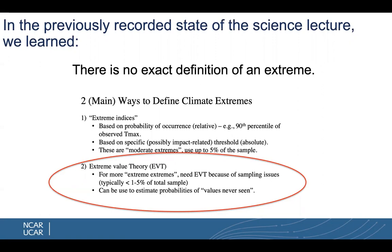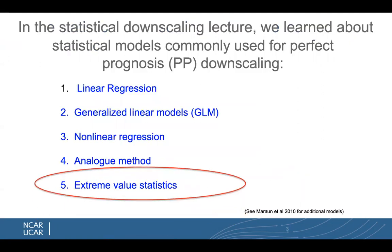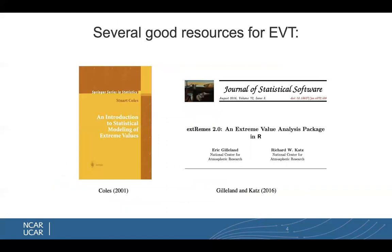The nice thing about EVT is it can be used to estimate probabilities of values that have not been seen before. Also, in the statistical downscaling lecture, we learned about statistical models commonly used for perfect prognosis downscaling. One of those was extreme value statistics, which we'll be talking about more in this lecture. I want to point out several very good resources to learn more about extreme value theory: the Kohl's 2001 book on an introduction to statistical modeling of extreme values, and a paper by Eric Gilland and Katz on Extremes 2.0, which is an extreme value analysis package in R — a really useful tool for examining extremes.